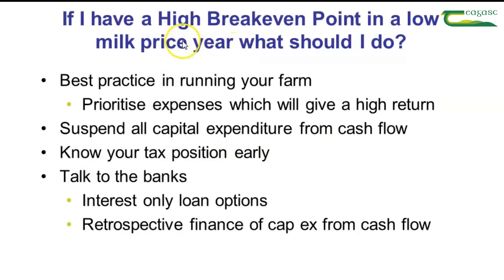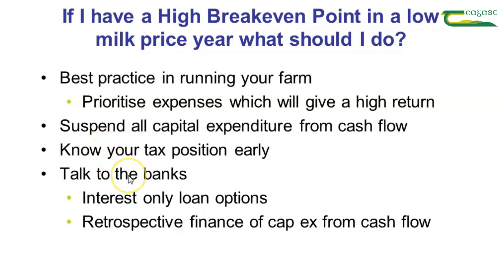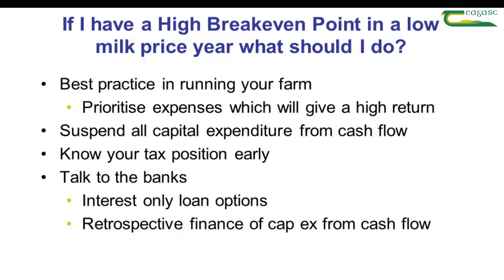If you have a high break-even point, in all cases you should always remember best practice and run your farm's essentials — maximising the output from grazed grass and maximising the genetic merit of your cows. Prioritise expenses which will give you a high return; for example, putting fertilizer on your farm will potentially grow more grass, which will reduce your feed costs and bring down your break-even point. You should suspend all capital expenses from cash flow, know your tax position early so you can plan for it, and you always have the option to talk to the banks, where there are options such as interest-only loans, retrospective finance, or capital expansion.